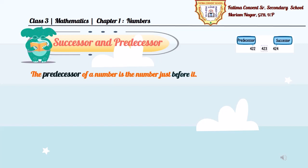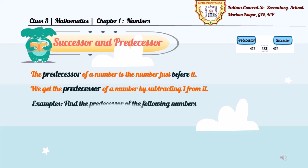Children, the predecessor of a number is the number just before it. We get the predecessor of a number by subtracting 1 from it. So, you need to compare successor and predecessor. In successor, we are adding 1. But in predecessor, we need to subtract 1 from the given number. So, let's see some examples to understand it more clearly.